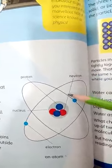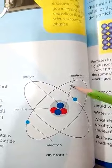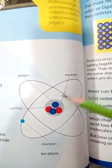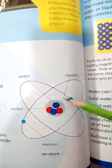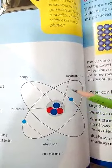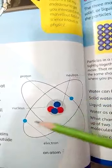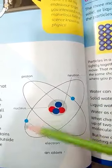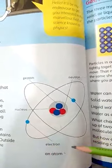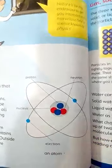Now, outside the nucleus but still inside the atom are particles called electrons. This is a water molecule.